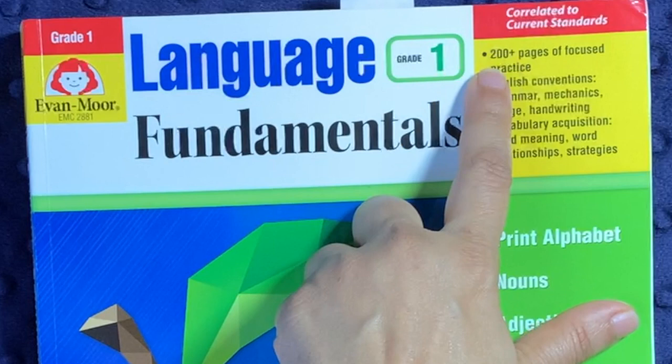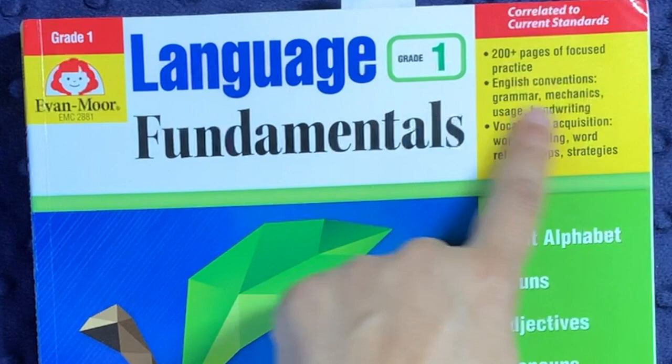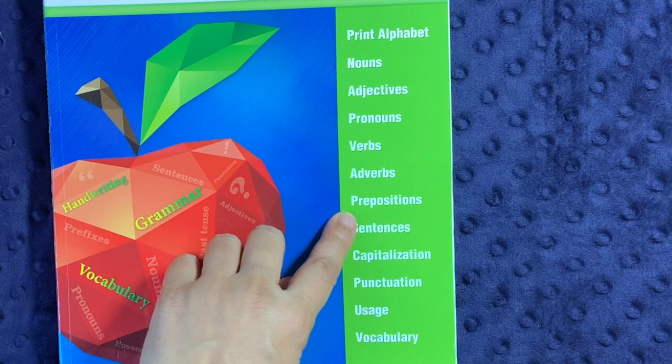Today I'm going to show you the grade one Language Fundamentals from Evan-Moor. It includes 200 plus pages of focused practice of grammar, mechanics, usage, handwriting, as well as a lot of vocabulary lessons. It goes through the alphabet, nouns, adjectives, pronouns, verbs, adverbs, prepositions, sentences, capitalization, punctuation, usage, and vocab.